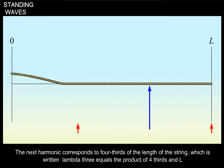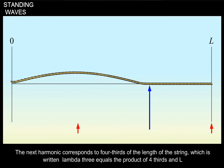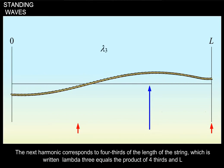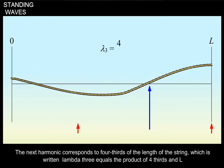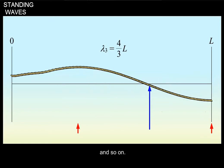The next harmonic corresponds to 4 thirds of the length of the string, which is written lambda 3 equals the product of 4 thirds and L, and so on.